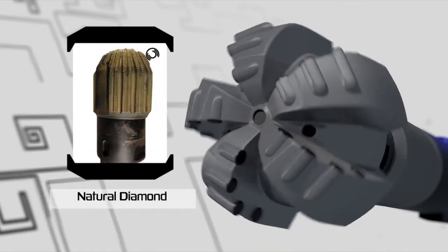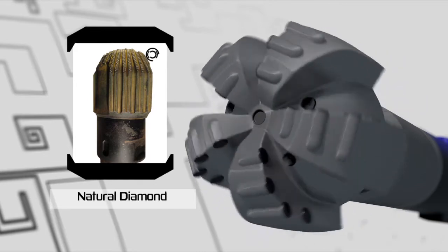Another type of fixed cutter drill bit is a natural diamond. These types of drill bits are used for harsh rock formations.